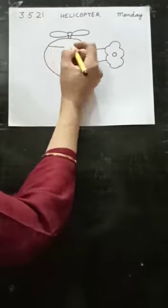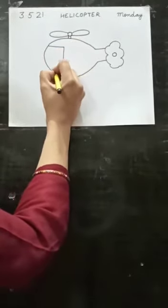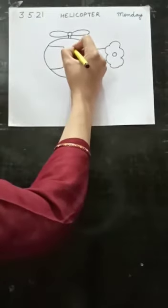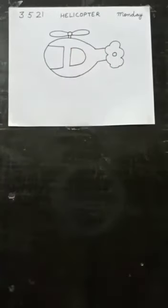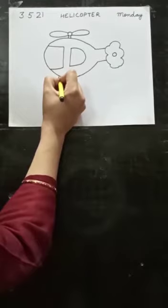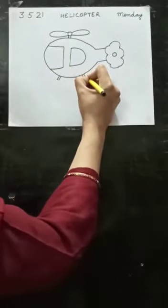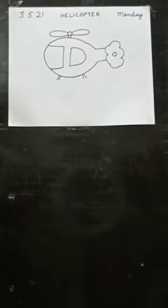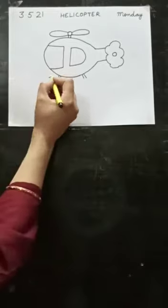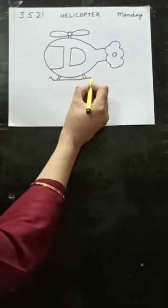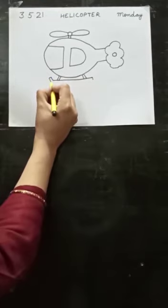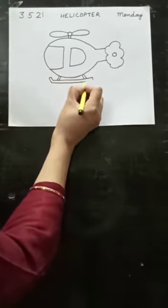Then a sleeping line here, standing line, then again a sleeping line, again a standing line here. Then you are to make a D here — just like the letter D in English. Now, two slanting lines this side, and two slanting lines on the other side. A small slanting line, then bring it down, then a sleeping line like this, then a small standing line, then a slanting line on this side, then again one big sleeping line.